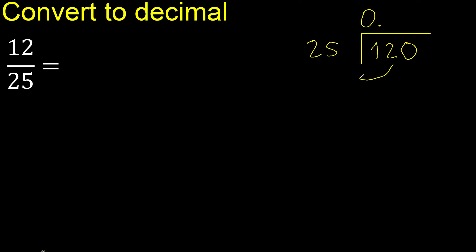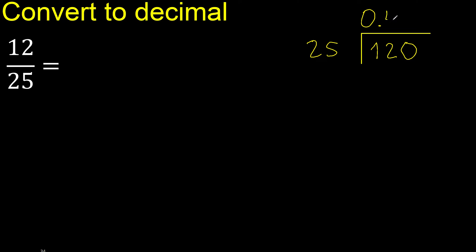120 is not less than 25. Multiply by which number is nearest to 120 but not greater. 25 multiplied by 5 is 125, which is greater. Multiply by 4 is 100, which is not greater. Subtract: remainder is 20.